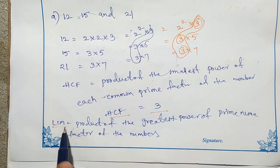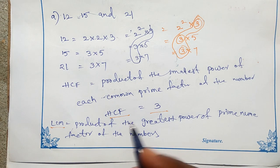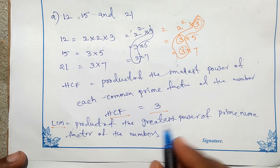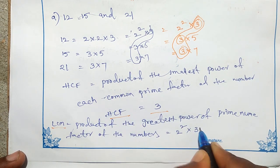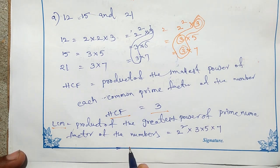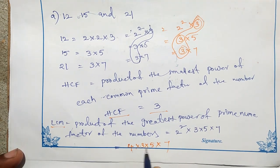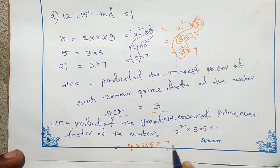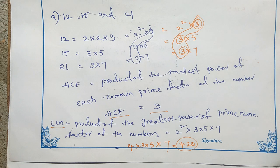Now LCM. LCM means the product of the greatest power of each prime factor of the numbers. From 12, 15, and 21, the prime factors are 2 squared, 3, 5, and 7. So LCM equals 4 into 3 into 5 into 7. That gives 12 into 5 equals 60, and 60 into 7 equals 420. So 420 is the LCM of the given numbers.